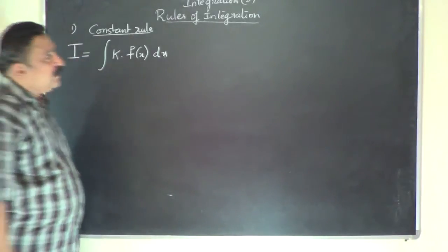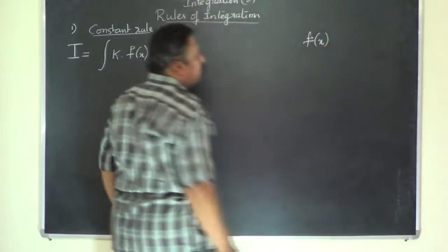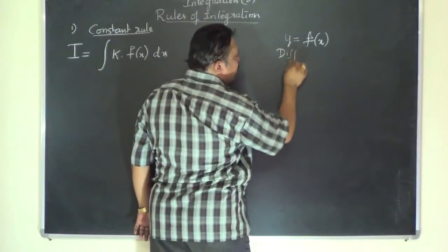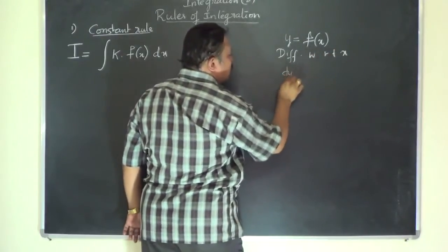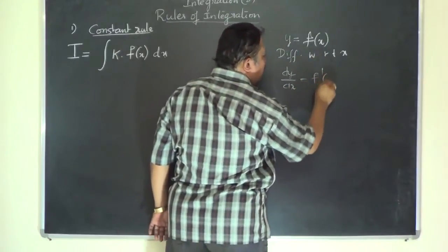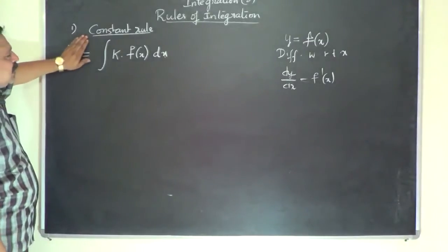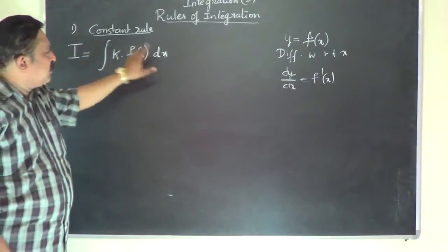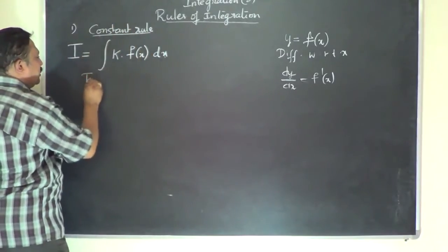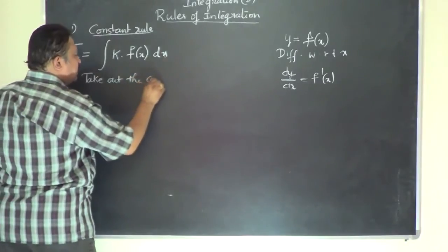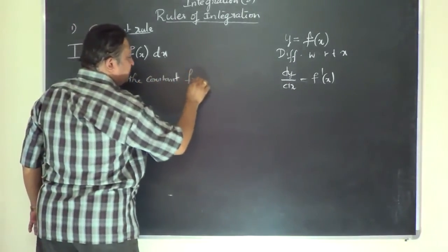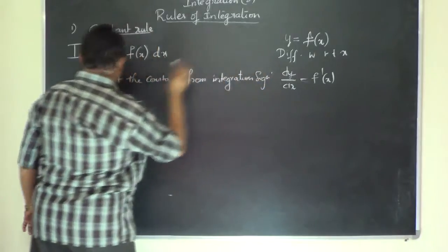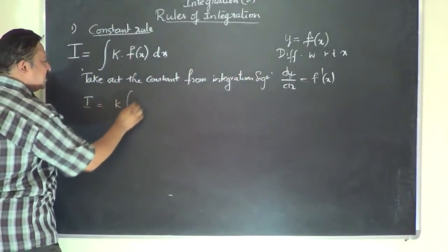In any integration problem it is a habit to write I on the left-hand side. Just as in differentiation we write y = f(x) and then dy/dx, in the same way the given problem for integration is written as I. The constant rule says: take out the constant from the integration sign. Then you are free to integrate, so I becomes equal to k times the integral of f(x) dx.